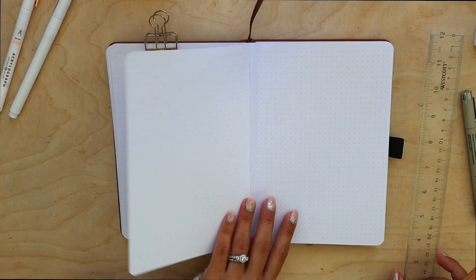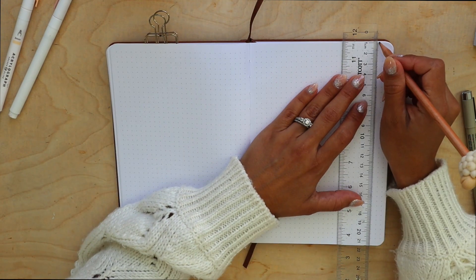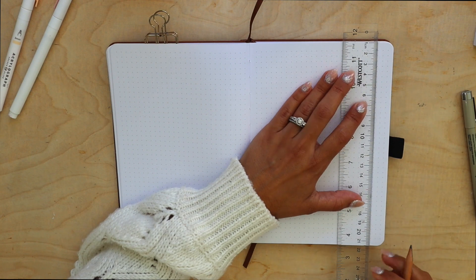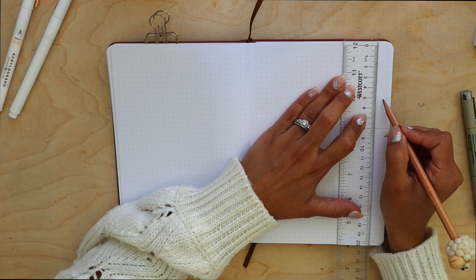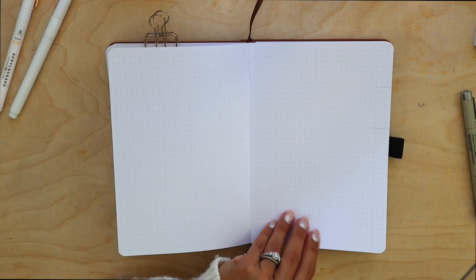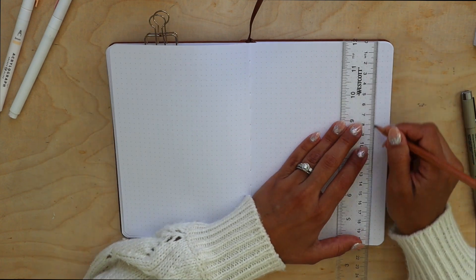If you want a different amount of tabs, just measure your notebook vertically and then divide that number by the amount of tabs you want and that will give you the length of each tab. Make sure you do all of your markings on each individual page.